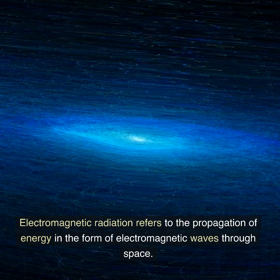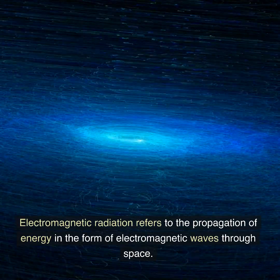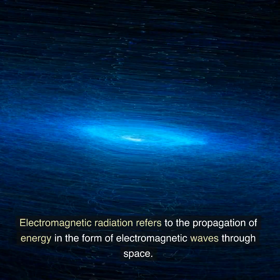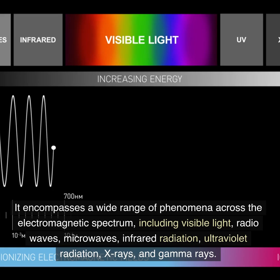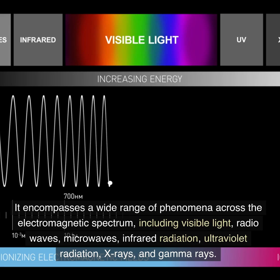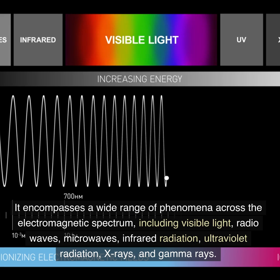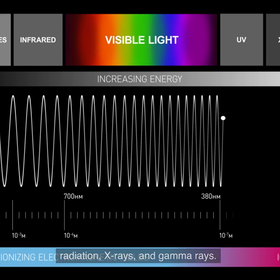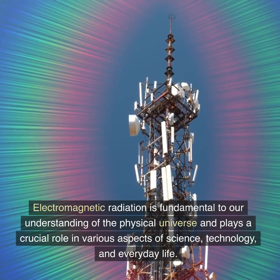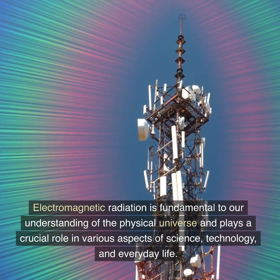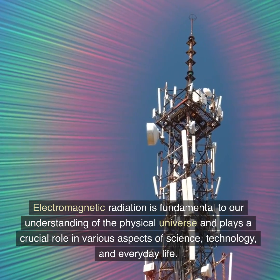Electromagnetic radiation refers to the propagation of energy in the form of electromagnetic waves through space. It encompasses a wide range of phenomena across the electromagnetic spectrum, including visible light, radio waves, microwaves, infrared radiation, ultraviolet radiation, X-rays, and gamma rays. Electromagnetic radiation is fundamental to our understanding of the physical universe and plays a crucial role in various aspects of science, technology, and everyday life.